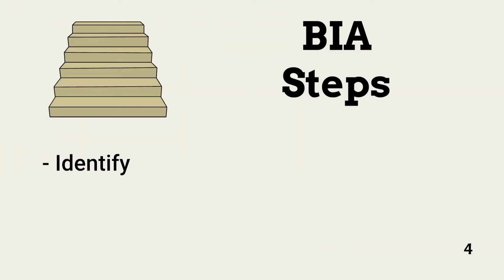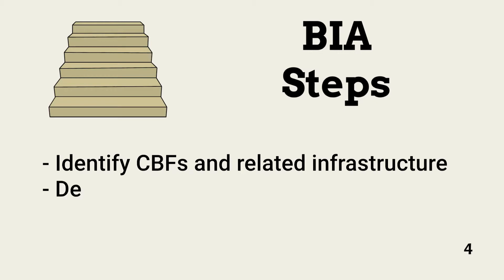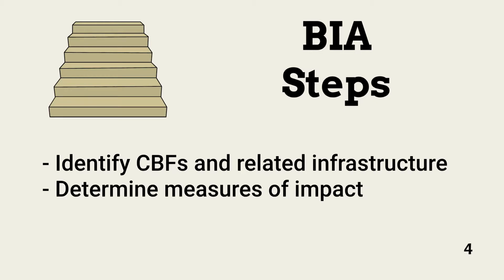The BIA process consists of two steps. First, the business continuity team works with management to identify CBFs. Second, the team continues to work with management to determine measures of impact and acceptable and achievable recovery milestones.